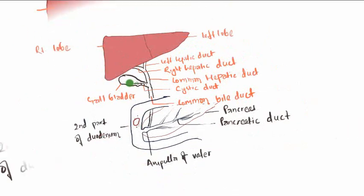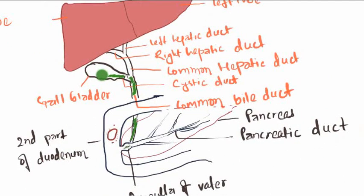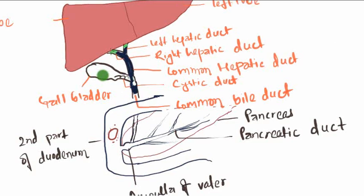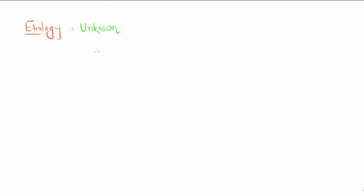Bile is produced from the liver and stored in the gallbladder. When food is present in the duodenum, bile is secreted from the gallbladder to the duodenum. In biliary atresia, bile cannot pass from the gallbladder to the duodenum or from the liver to the gallbladder or to the duodenum.